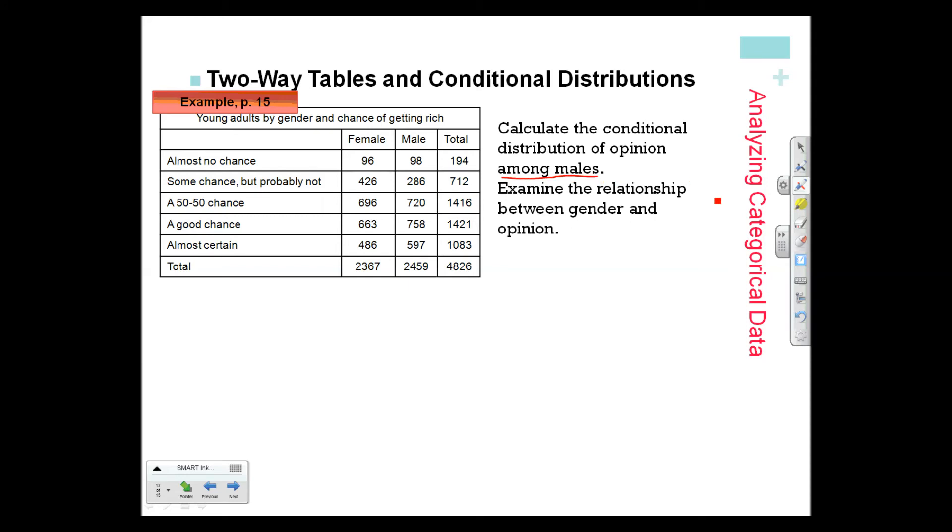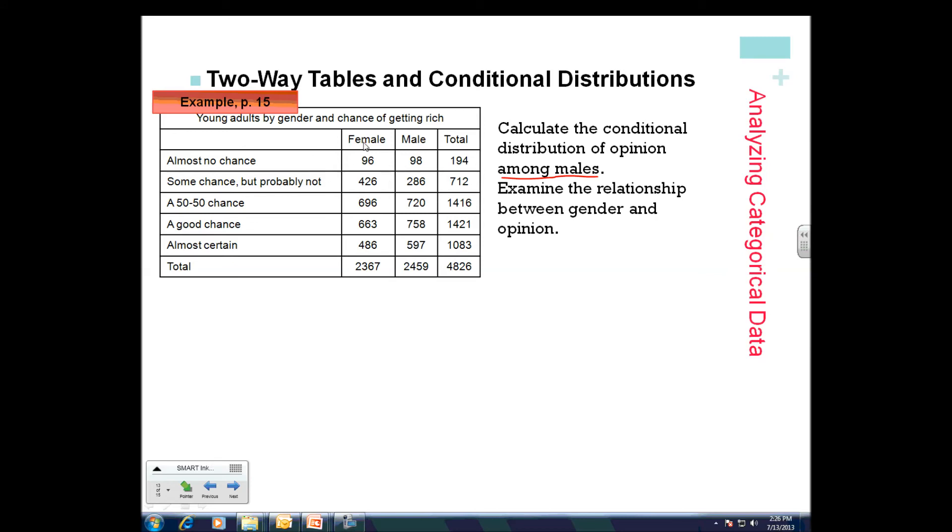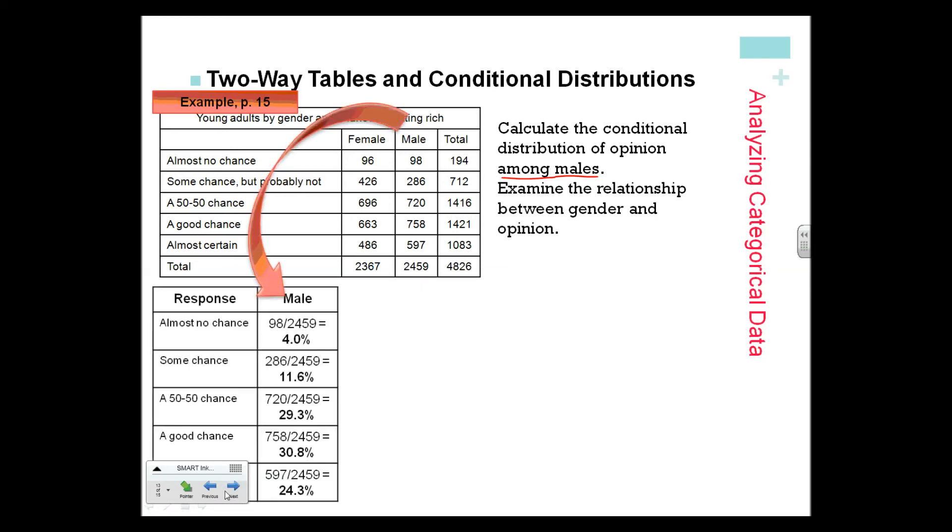That is our clue as to what we're going to divide by. We're going to divide by the total number of males, which is 2,459, every time. Very important to think about: am I dividing by these totals or am I dividing by these totals? Here we're using the totals at the bottom because that's the total number of females and the total number of males.